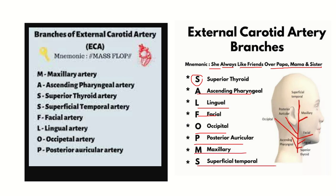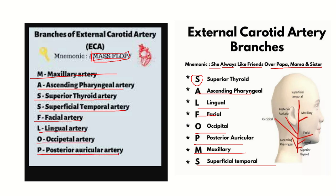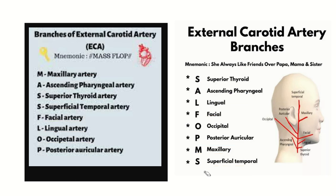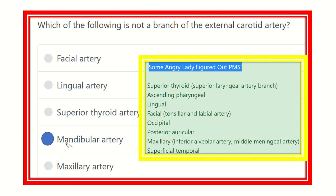Another mnemonic is MASSPLOT: M for maxillary artery, A for ascending pharyngeal artery, S for superior thyroid artery, S for superficial temporal artery, P for posterior auricular, L for lingual, O for occipital, T for... And a third mnemonic is 'Some Angry Lady Figures Out EMS.' Our final answer is the mandibular artery, because the mandibular artery is NOT a branch of the external carotid artery.